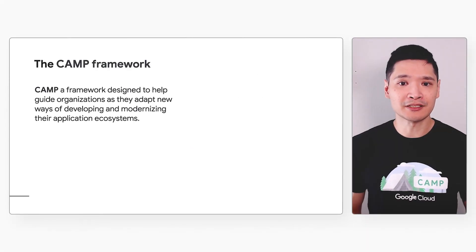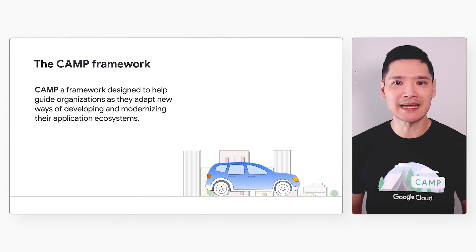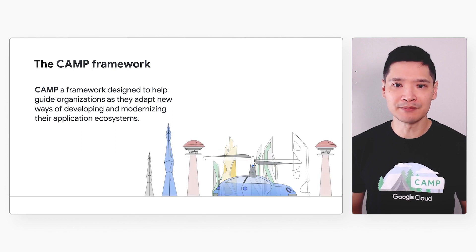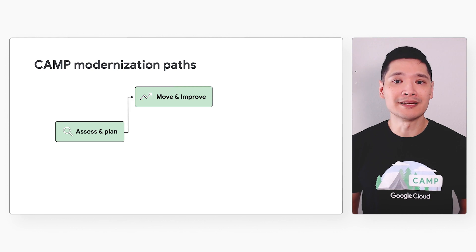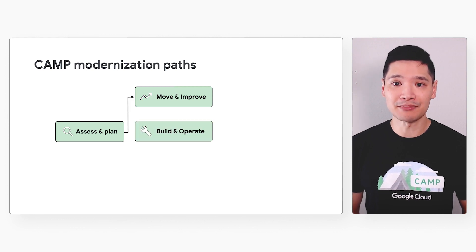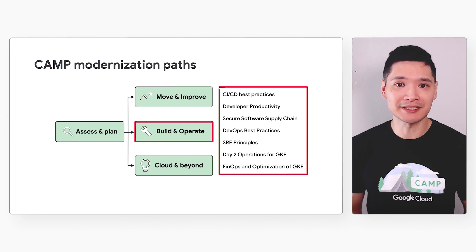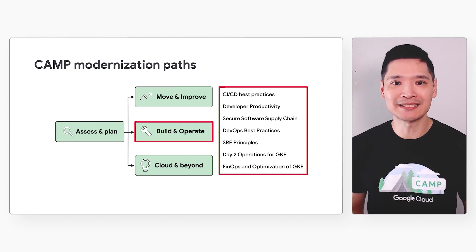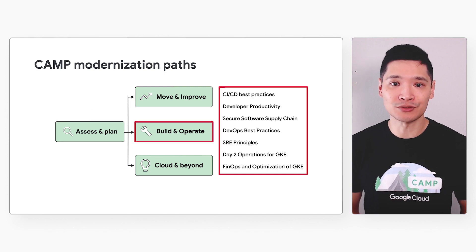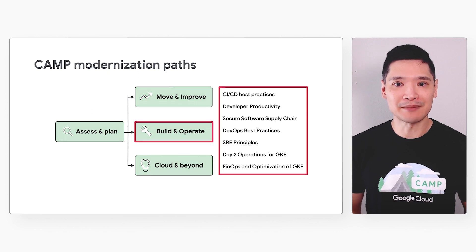In our first video, we talked about Google's CAMP, a framework designed to help guide organizations as they adopt new ways of developing and modernizing their application ecosystems. One of the key pillars of CAMP is Build and Operate. As cloud computing continues to evolve, organizations are interested in learning how to build and operate their applications using the latest development patterns, platform capabilities, and tooling. A key area of interest is container-based applications.